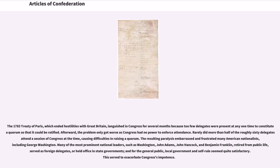The 1783 Treaty of Paris, which ended hostilities with Great Britain, languished in Congress for several months because too few delegates were present at any one time to constitute a quorum so that it could be ratified. Afterward, the problem only got worse as Congress had no power to enforce attendance. Rarely did more than half of the roughly 60 delegates attend a session of Congress, causing difficulties in raising a quorum. The resulting paralysis embarrassed and frustrated many American nationalists, including George Washington.